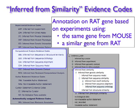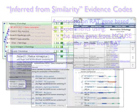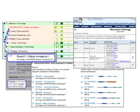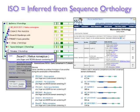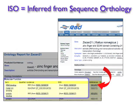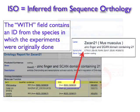Which one is used depends on what kind of similarity the two genes or gene products display. For example, if the two genes are known orthologs of each other, as is the case with many rat, mouse, and human genes, the evidence code ISO, or inferred from sequence orthology, is used. In these cases, the With field contains the ID of the gene or gene product on which the experiments were originally done, and to which the annotated gene has similarity.